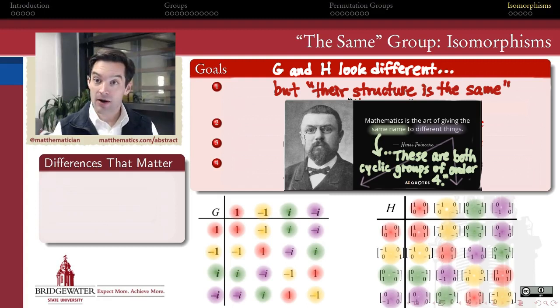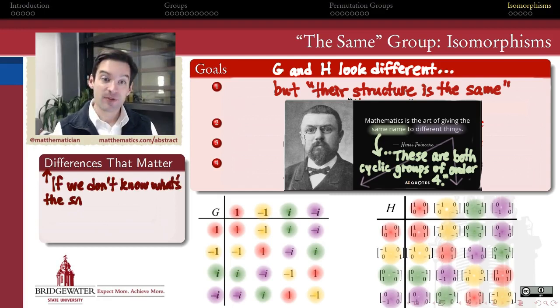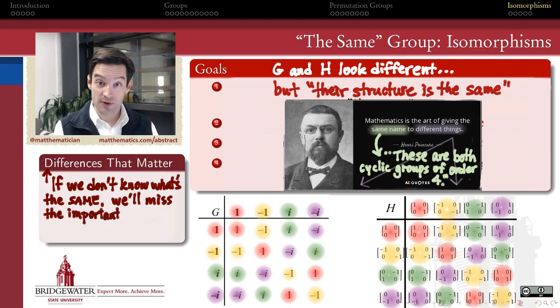Why we care about telling when two things are the same in abstract algebra is if we don't know what's the same, then we're going to miss the differences that do matter. If there really was a difference in the algebraic structure of these two groups, we would want to be able to tell that. But if there's not, as there is in here, then we need to be able to say that as well. A key part of being able to tell the difference between two things is being able to know when two things are the same. And that's what this series of videos are about.